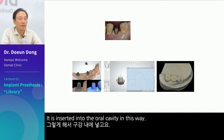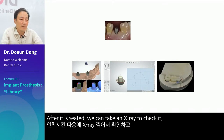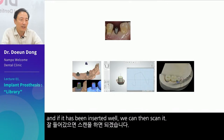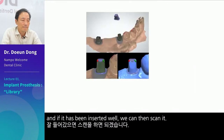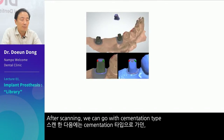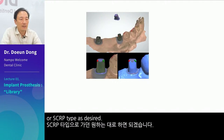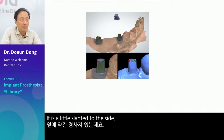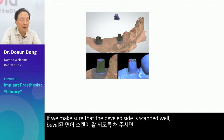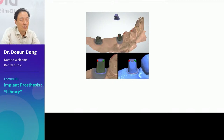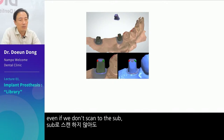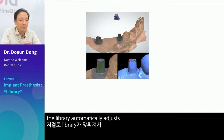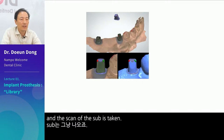It is inserted into the oral cavity in this way. After it is seated, we take an x-ray to check it, and if it has been inserted well, we can then scan it. After scanning, we can go with cementation type or SCRP type as desired. It is a little slanted to the side. If we make sure that the beveled side is scanned well, even if we don't scan to the sub, the library automatically adjusts and the scan of the sub is taken.